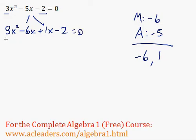So over here we can factor by grouping. 3x squared minus 6x, I can factor out 3x. 3x squared divided by 3x is just x, negative 6x divided by 3x is just negative 2.